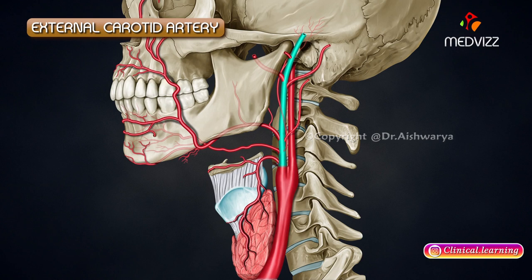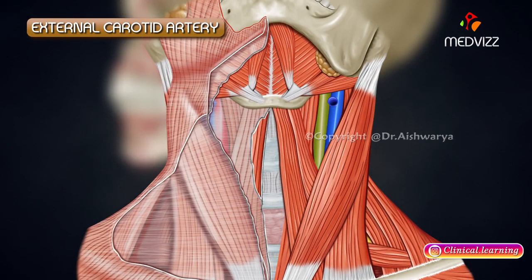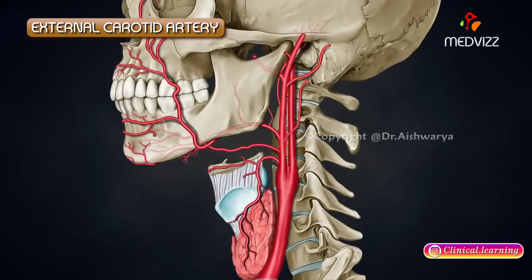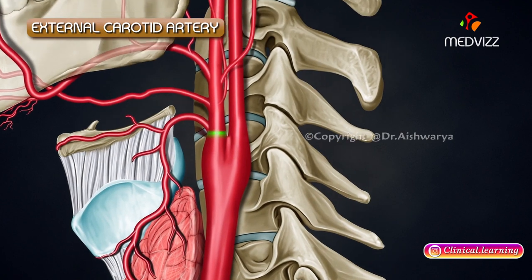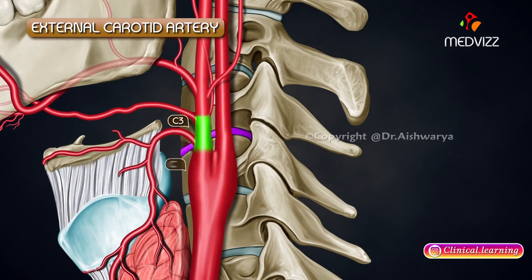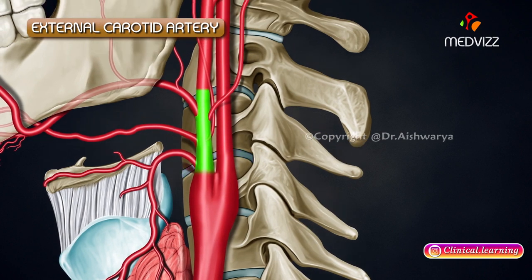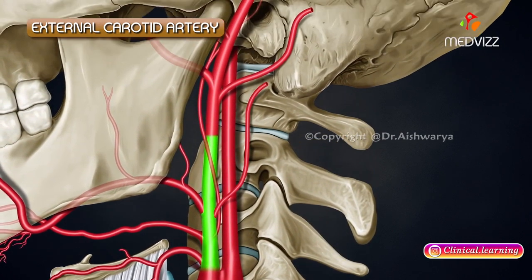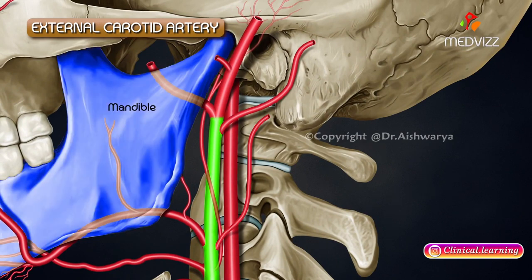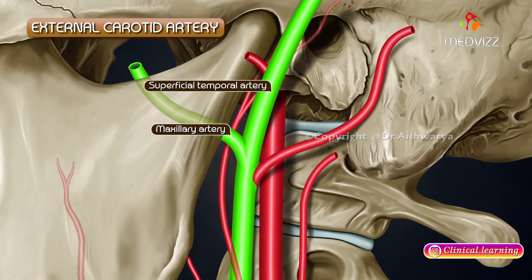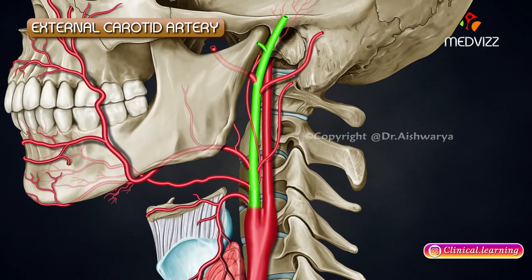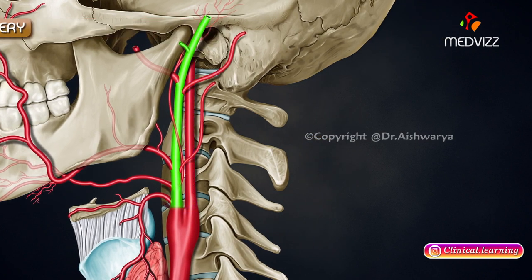The external carotid artery begins in the carotid triangle at the level of the upper border of the thyroid cartilage, opposite the disc between the third and fourth cervical vertebrae. It runs upwards, slightly backwards and laterally, and terminates behind the mandible by dividing into the maxillary and superficial temporal arteries. It has a slightly curved course, being anteromedial to the internal carotid artery in its lower part and anterolateral in the upper part.